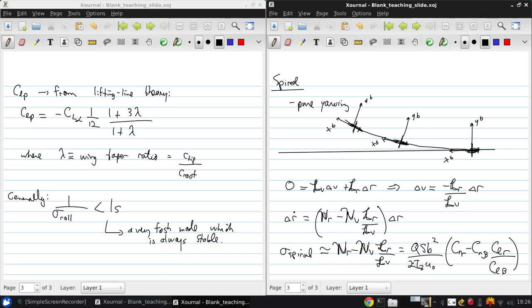In reality, there's always going to be some roll coupled to the yaw in the 4x4 system, but in this approximation we're neglecting that coupling. We can see that the spiral mode can either be stable, where sigma spiral is less than 0, or unstable, where sigma spiral is greater than 0, depending on the signs and values of the four contributing stability derivatives that we see here.